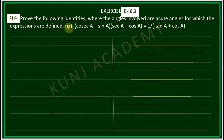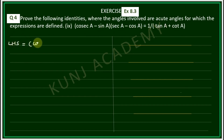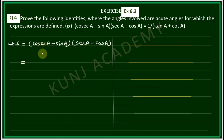Number 9: (cosecA - sinA)(secA - cosA) is equal to 1 upon (tanA + cotA). Left hand side. cosecA can be written as 1/sinA and secA can be written as 1/cosA.